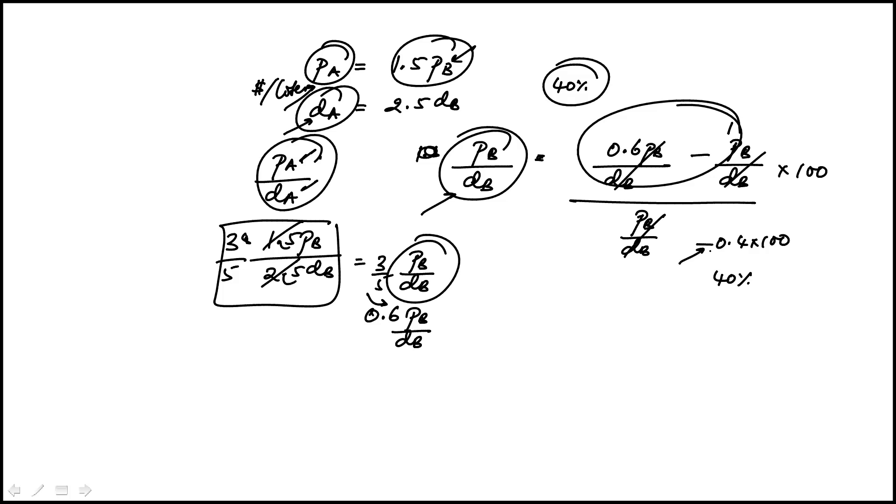The other is you can pick numbers. You can pick a price for item B - you can say it costs $10 per liter. Then price of item A would be $15 per liter because it's 50% more.